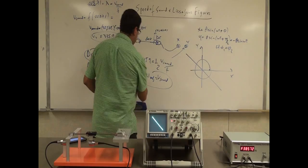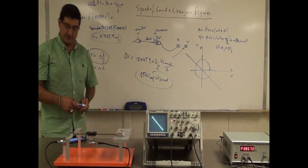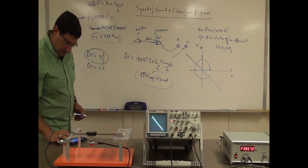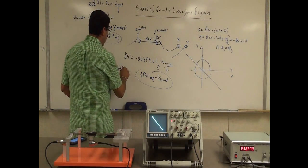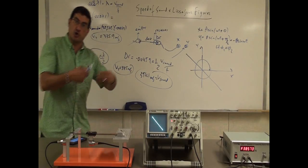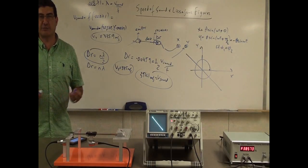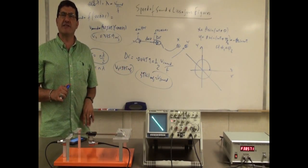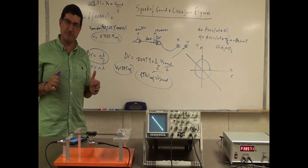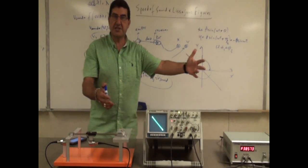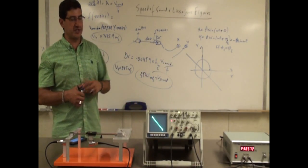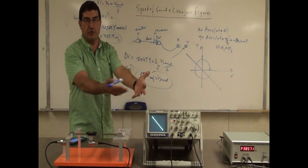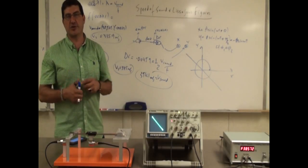Using the frequency of 38,573 Hz: v = 2 × 38,573 × 0.00459 ≈ 354.1 m/s. Averaging the two results: (354.1 + 335.9) / 2 = 345 m/s. This is close to the expected value of 343 m/s at 20°C. Since the room is about 25°C, we expect 345–350 m/s, so the result is good. You can do many more runs and average all results.